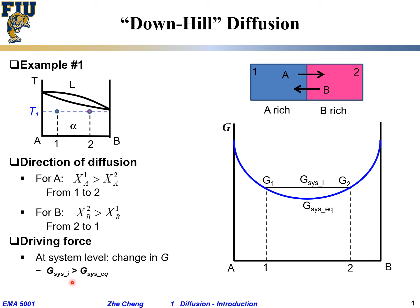The initial Gibbs free energy is higher than the final Gibbs free energy. This reduction in Gibbs free energy — a negative free energy change — drives the process. This is a so-called spontaneous process at the system level. Thinking deeper, what drives the individual motion of element A and element B? At the component level, we consider mu — the so-called chemical potential, or partial molar Gibbs free energy — for each component i (either A or B).